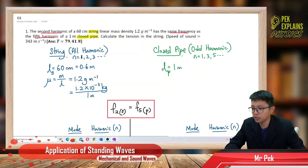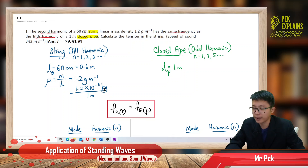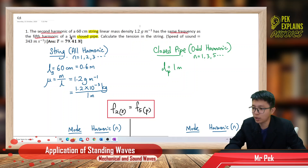The information given: the length of string is 60 cm, which must be changed to meters in SI units. The mass density mu, which is mass per unit length, is 1.2 gram per meter — remember to change grams to kilograms, so 1.2 × 10⁻³ kg/m. The closed pipe is also given as 1 meter long.